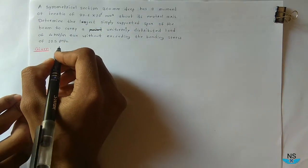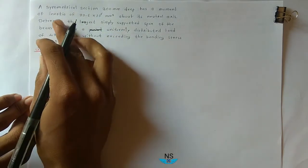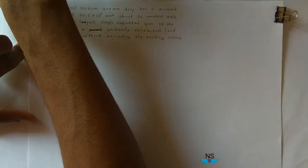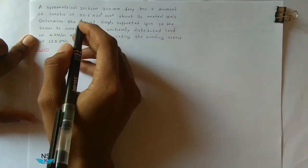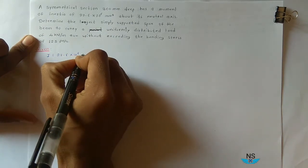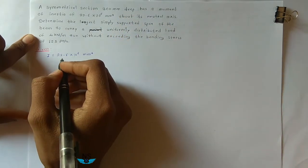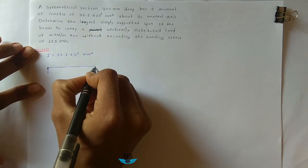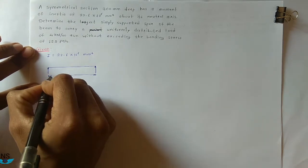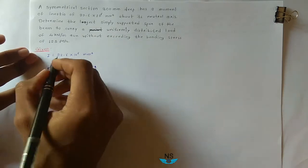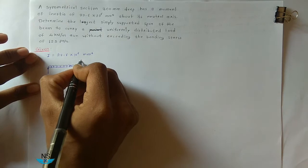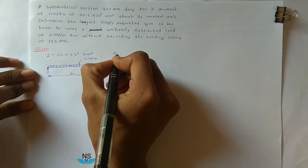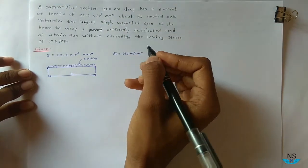Given: a symmetrical section — it may be a C-section, I-section, or rectangular section — with 300mm depth. Moment of inertia I = 22.6 × 10⁶ mm⁴ about its neutral axis. The beam is simply supported and carries a UDL of 4 kN per meter. The allowable bending stress σ_B = 125 MPa, that is 125 N/mm².